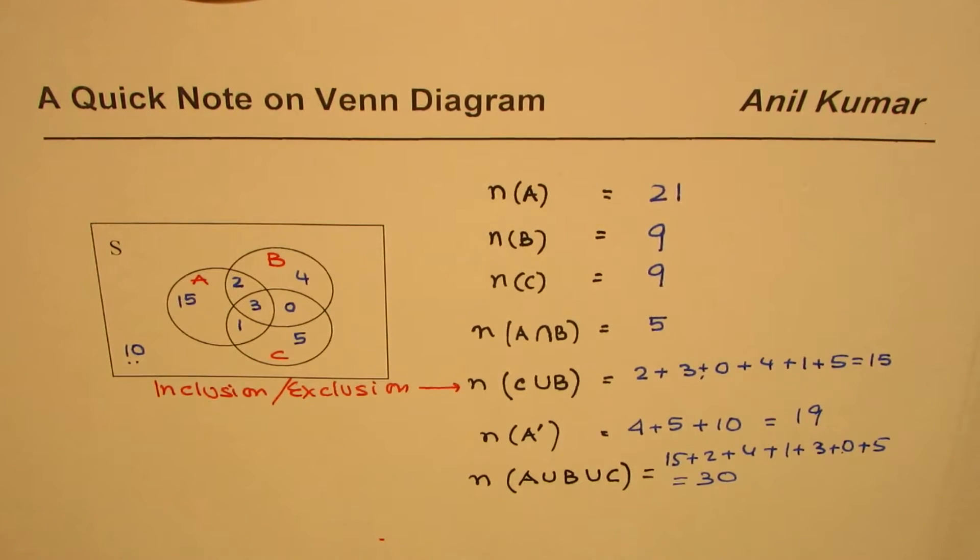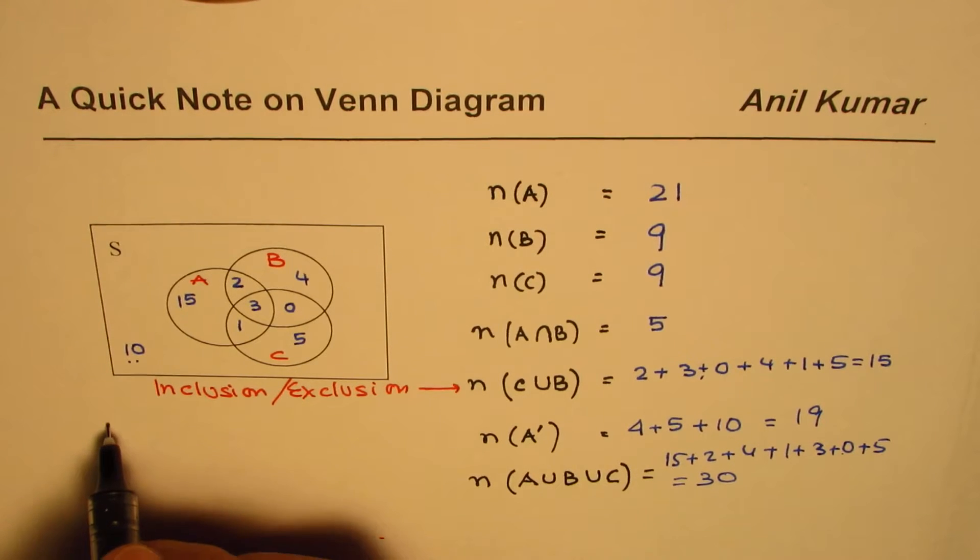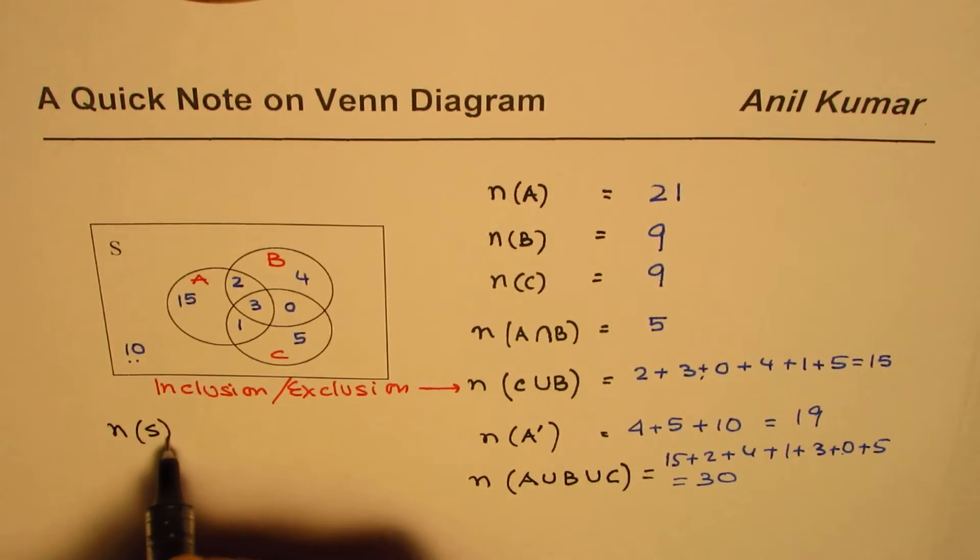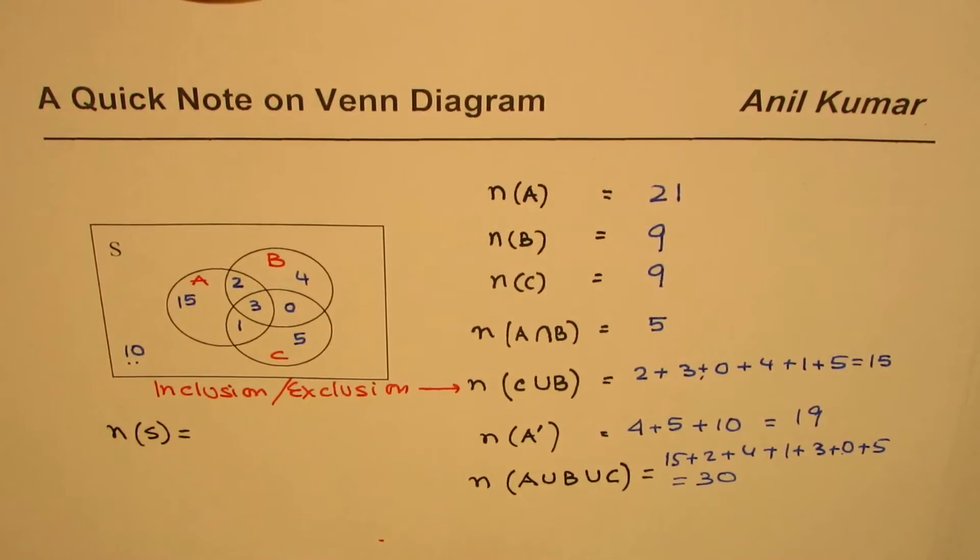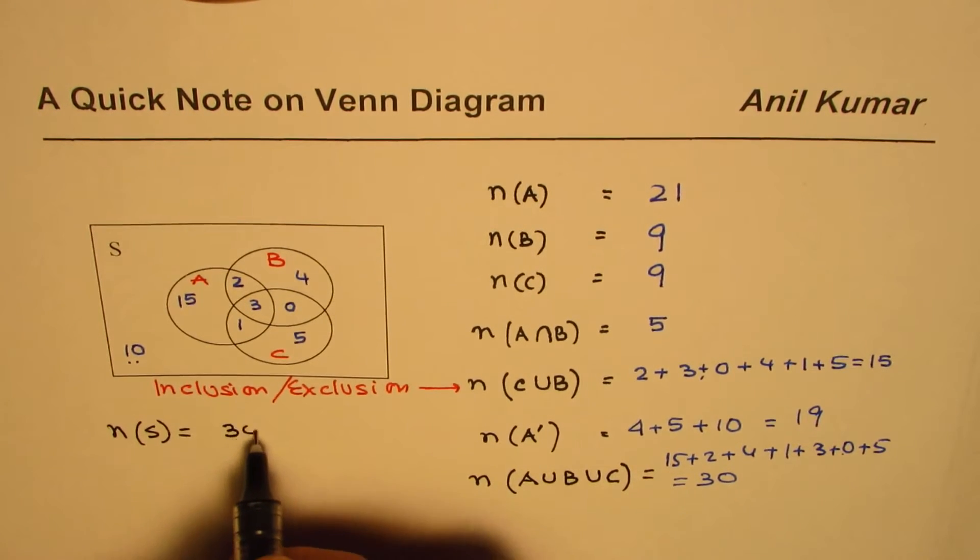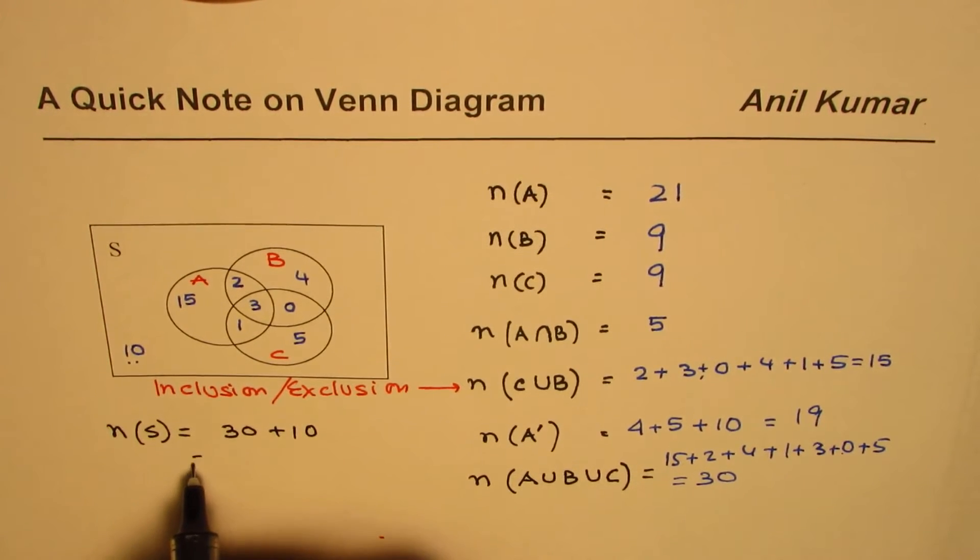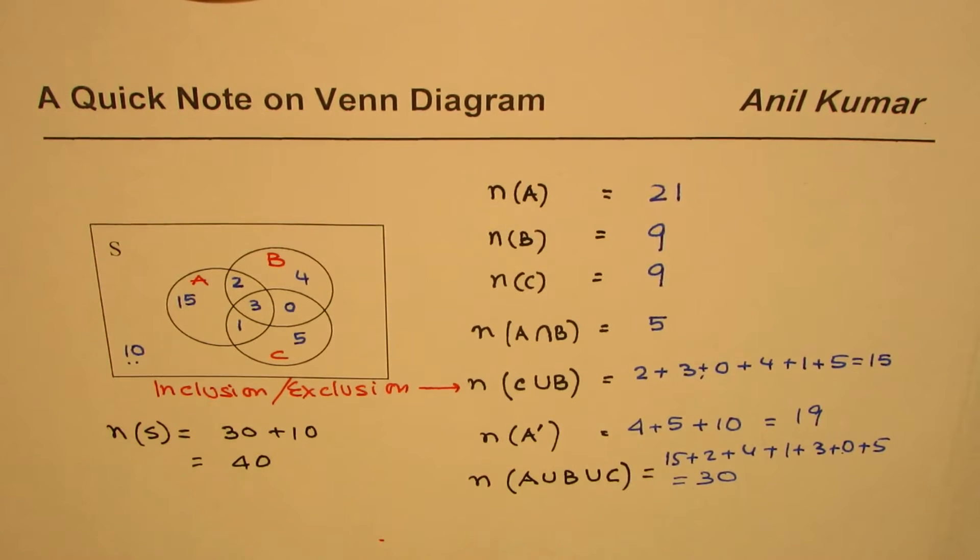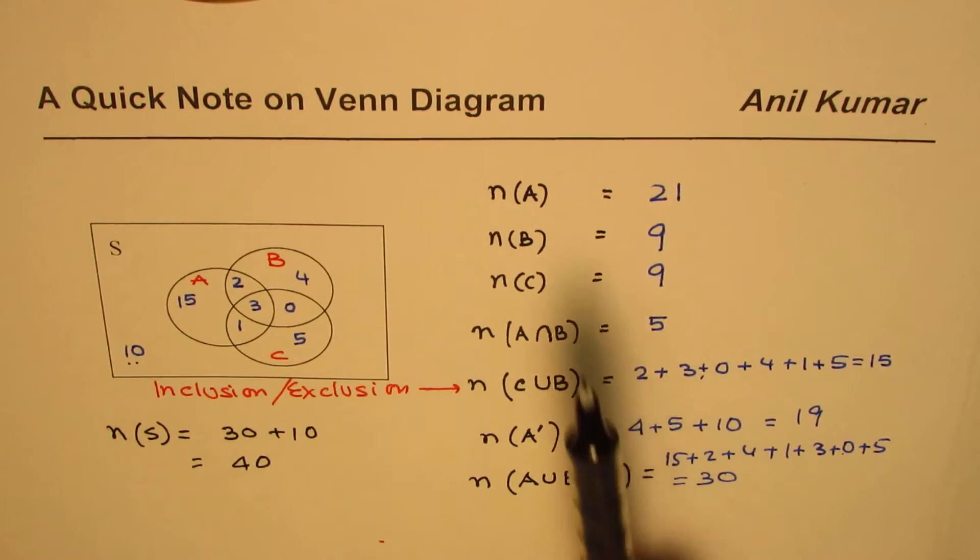Now can you answer my question: how many elements do we have in our sample space? Well, clearly 30 are in these and 10 are outside, so we have 30 plus 10, that equals 40 elements in all.